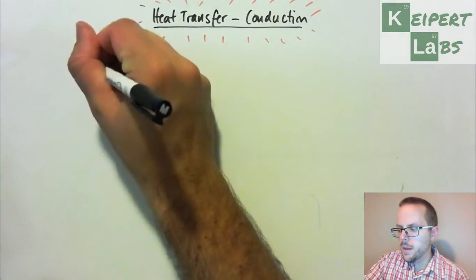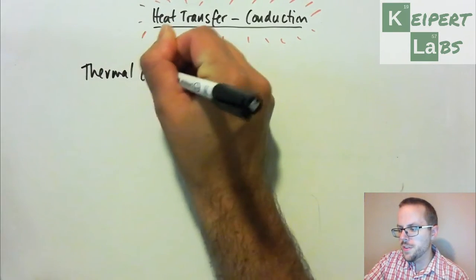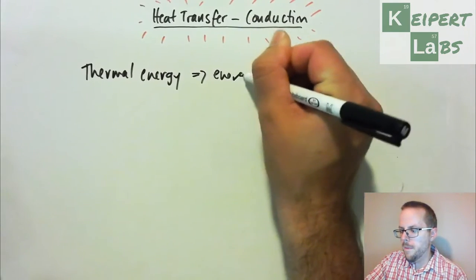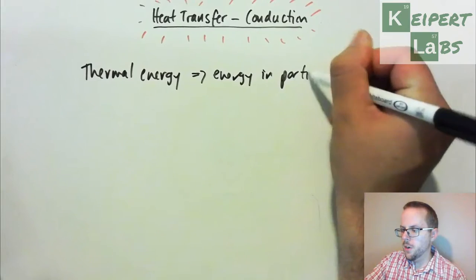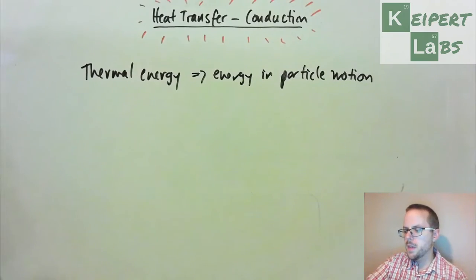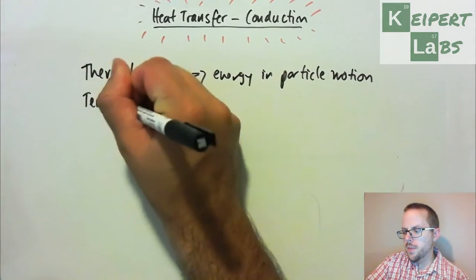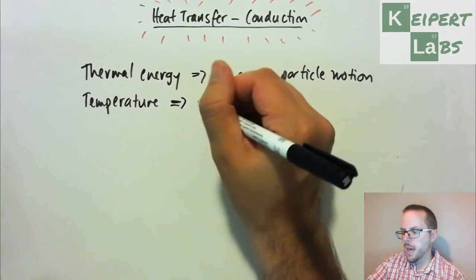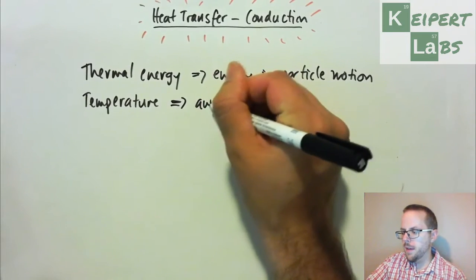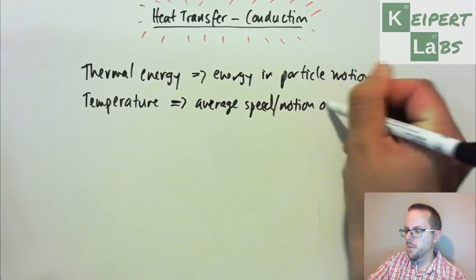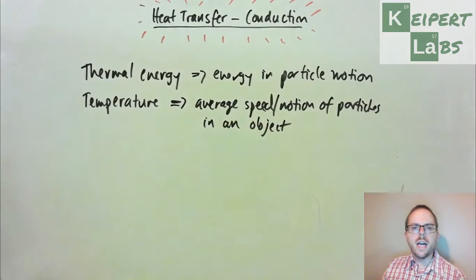In the previous videos we've introduced this concept of thermal energy, that is the energy in particle motion in an object. So it's based on how much the particles of an object are moving. We can measure this using temperature, which tells us about the average speed or motion of particles in an object. High temperature objects have more thermal energy than low temperature objects.